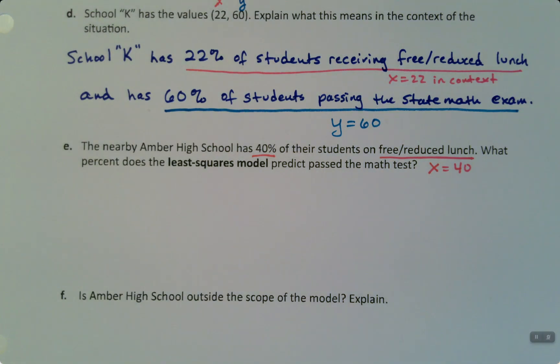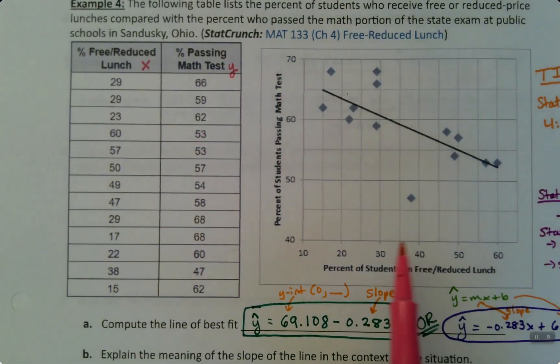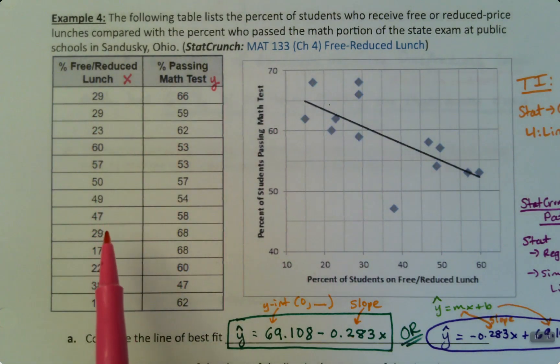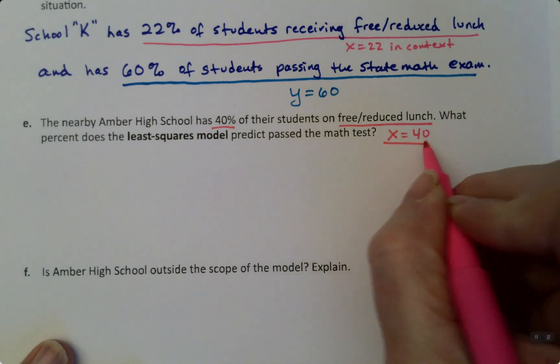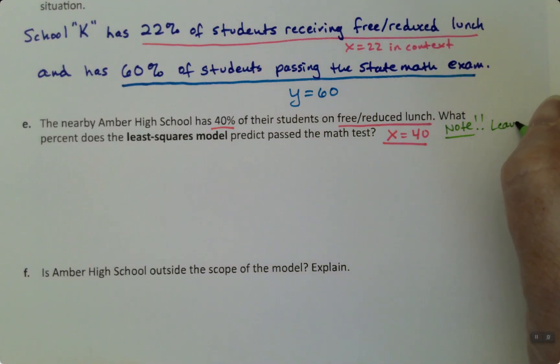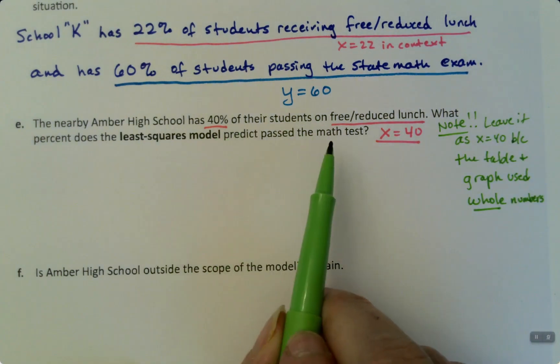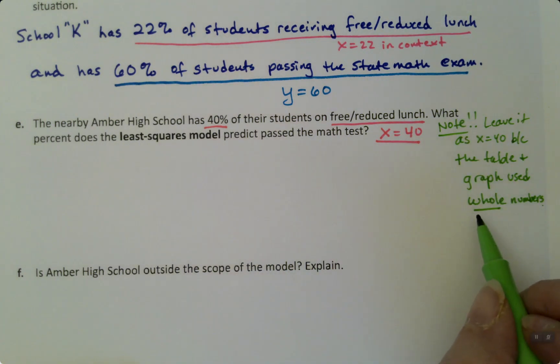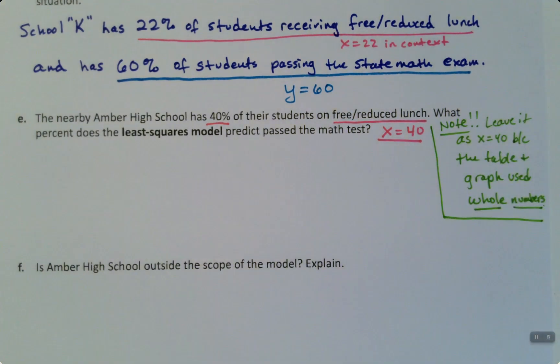This is a mistake a lot of students make. If you go back to the table or to the graph, you can see that it's using whole numbers. So it's using percent values, not decimal values. So you have to leave it as 40 because that's the way the table left them. It did not make them decimals. So we need to make a note of that. That's a very important note. A lot of students mess that up. And the graph used whole numbers. A lot of students see this and see that it's 40 percent and they want to make it 0.40, which is correct, but not useful for our particular problem. So because our table used whole numbers, we're not going to make these decimals.